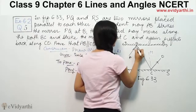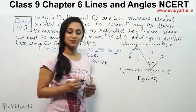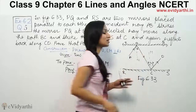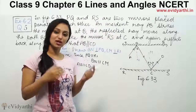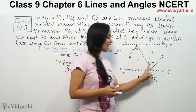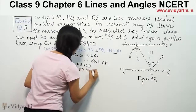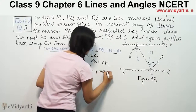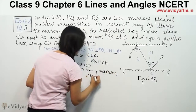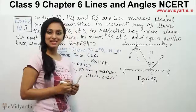Let's label the angles: angle 1 and angle 2 at point B, and angle 3 and angle 4 at point C. By the law of reflection, angle of incidence equals angle of reflection, so angle 1 is equal to angle 2, and angle 3 is equal to angle 4.